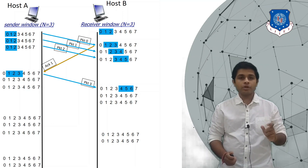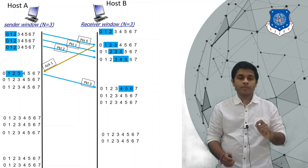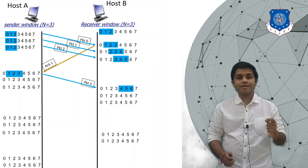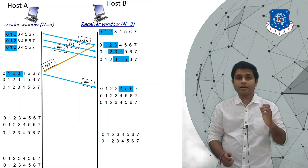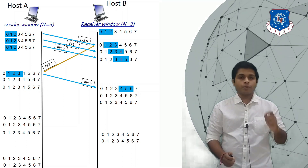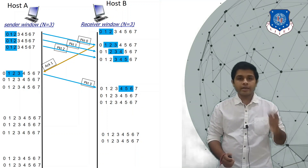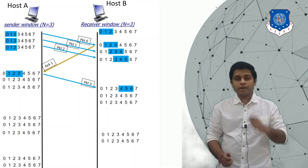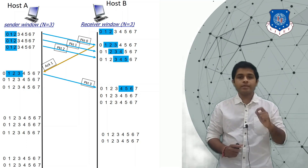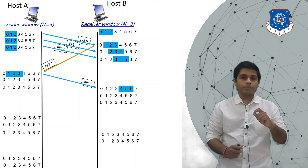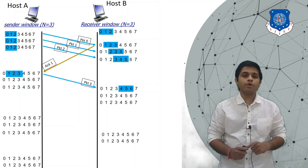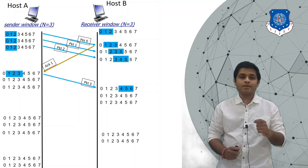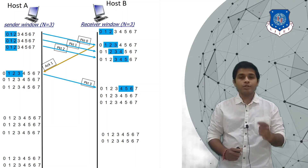The current position of the sender's window is at 1, 2, and 3. From the current position of the sender's window we can know how many packets are in transmission and not yet acknowledged — packets 1, 2, and 3 are currently in transmission and we have not received any acknowledgement yet. The current position of the receiver's window is 4, 5, and 6, which tells us which sequence of packets the receiver is expecting next.